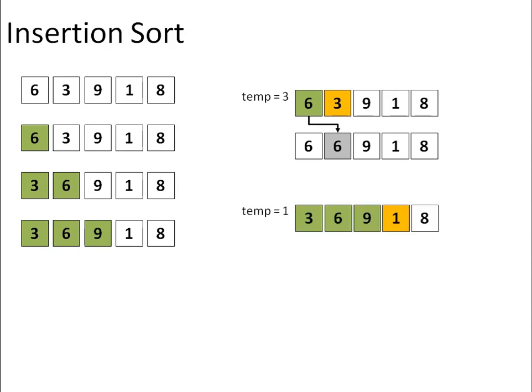Next, insertion of 1 takes place. Since 1 is less than all the other elements that is 3, 6 and 9, so they all will be shifted one by one. First, 9 will be shifted, then 6 and then 3.